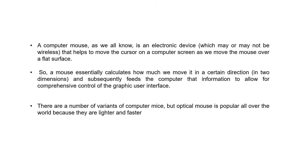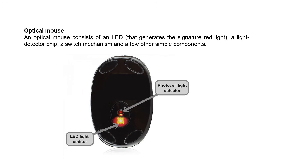There are a number of variants of computer mice, but the optical mouse is much more popular over all the other ones because they are lighter and faster. An optical mouse consists of an LED that generates a red light, a light detector chip, a switch mechanism, and a few other simple components.